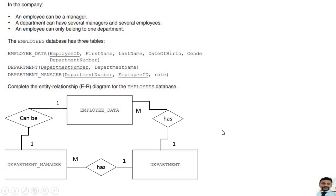The relationship between department and employee is one-to-many, and the relationship between department and department manager is also one-to-many. But a manager can be only one employee, so because of that I am using a one-to-one relationship between employee and department manager.